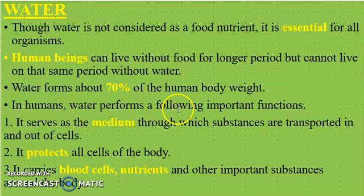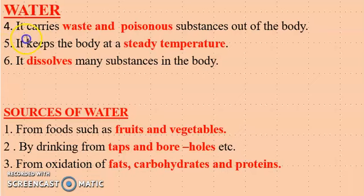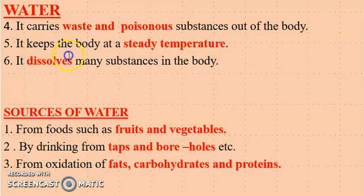In humans, water performs the following important functions. One, it serves as the medium through which substances are transported in and out of cells. Two, it protects all cells of the body. Three, it carries blood cells, nutrients and other important substances around the body. It also carries waste and poisonous substances out of the body — waste substances like urea and carbon dioxide. It also keeps the body at a steady temperature, that is, it regulates our body temperature. And finally, it dissolves many substances in the body, so it acts as a medium for nutrients to be dissolved in our body.